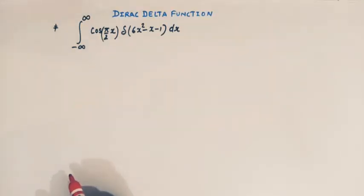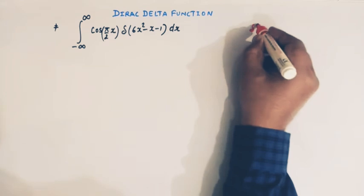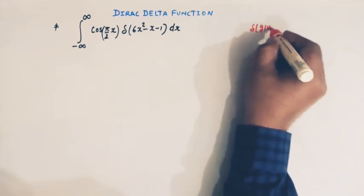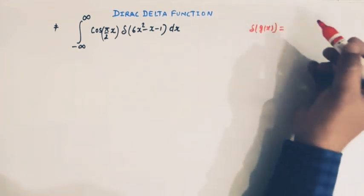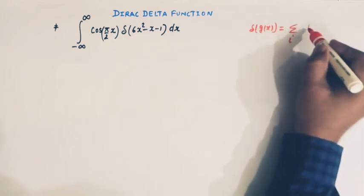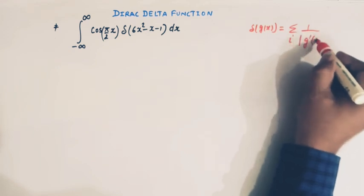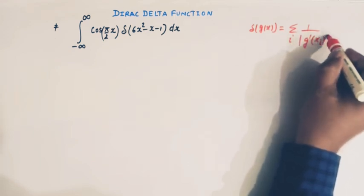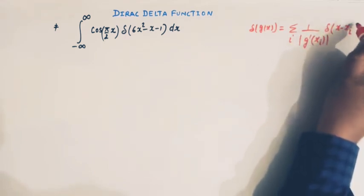We are going to use a very important property of Dirac delta function which says that if g(x) is a function of x, then delta of g(x) is equal to the sum over i of 1 over the absolute value of g prime of x_i, times delta of x minus x_i.